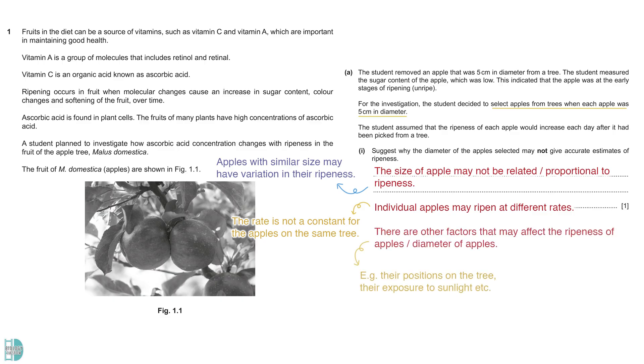This is not a constant for the apples on the same tree. Lastly, the size and ripeness of apples may be influenced by other factors, such as their position on the tree and their exposure to sunlight.